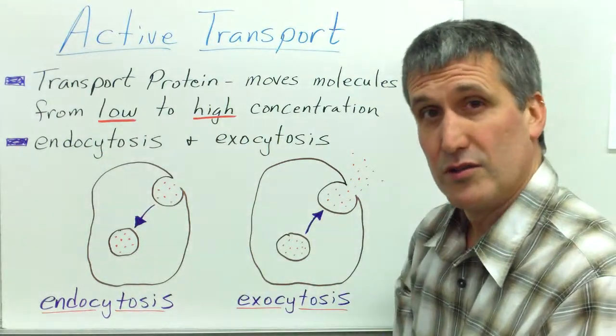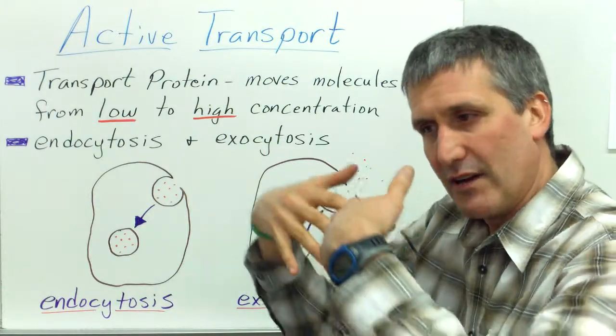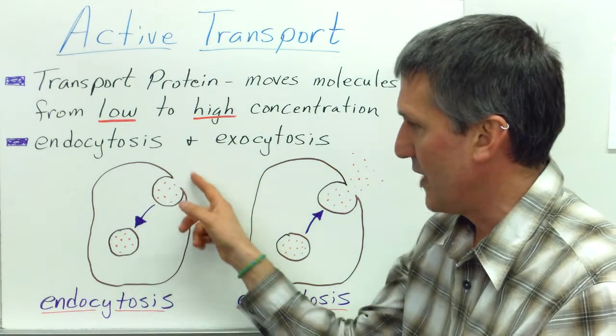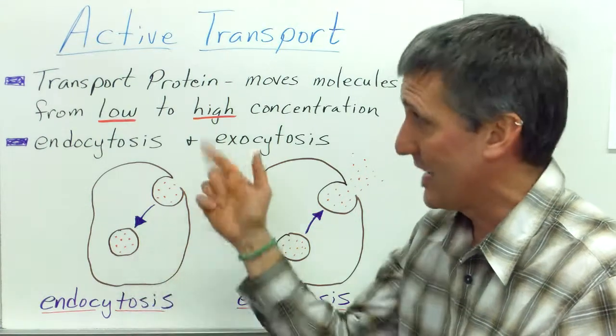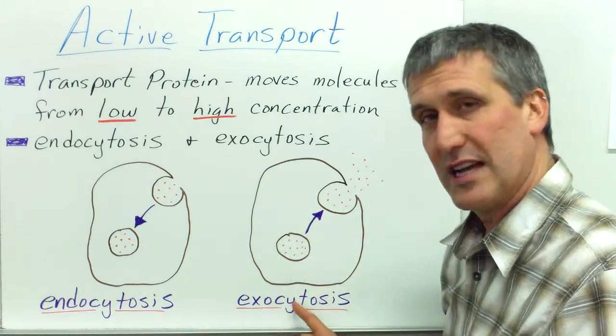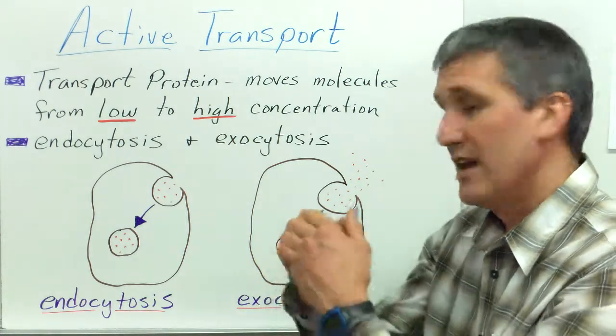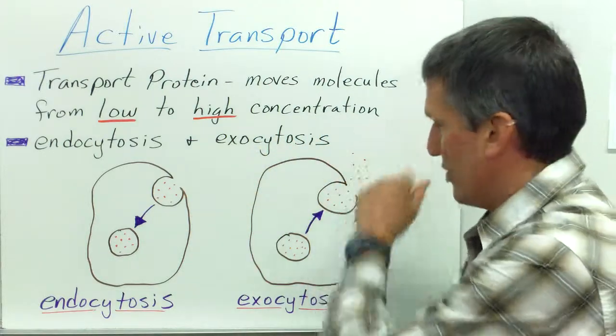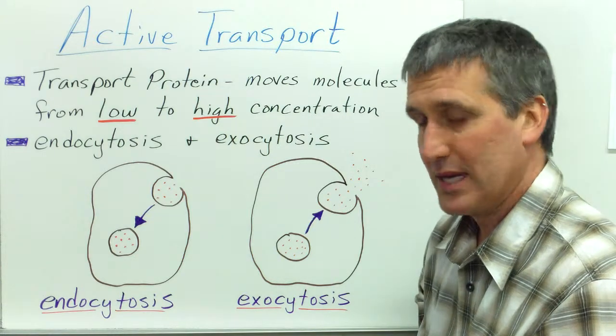The cell can also do something called endocytosis and exocytosis. The membrane is flexible, and the cell can actually engulf groups of molecules or substances from its environment and then pinch off and move it into a vacuole inside the cell. This is active transport because it requires energy for the cell to do this. The reverse is possible, exocytosis, where you start with a vacuole inside of the cell. It moves to the cell membrane, fuses with the cell membrane, and then releases the substances into the external environment. Again, active because it requires ATP or energy.